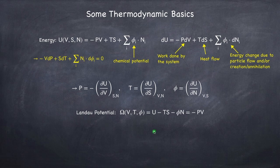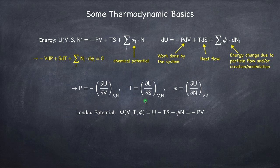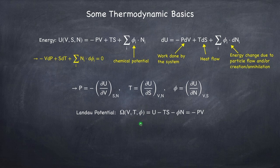The Landau potential is the total energy minus T·S minus phi·N — and again, a sum is implied — which just ends up being -PV. The natural variables for this potential are volume, temperature, and chemical potential. Entropy as a natural variable is not very practical since it's not easy to measure or deal with mathematically. Temperature and volume, however, are easily measurable. The chemical potential is not necessarily easily measurable, but we'll see in a bit why it's more useful to use as a variable than the particle number.